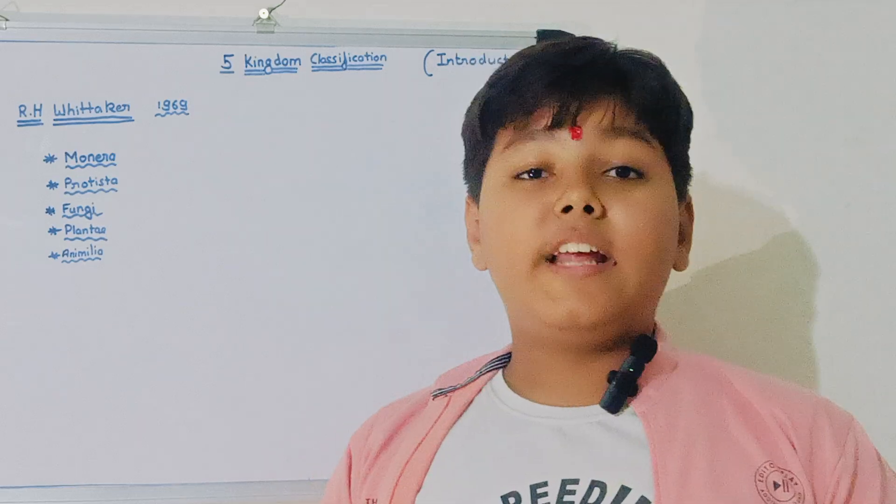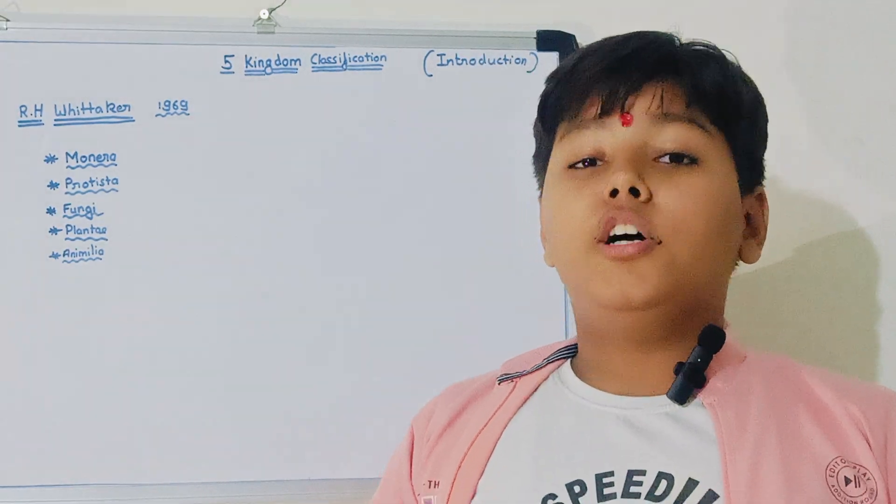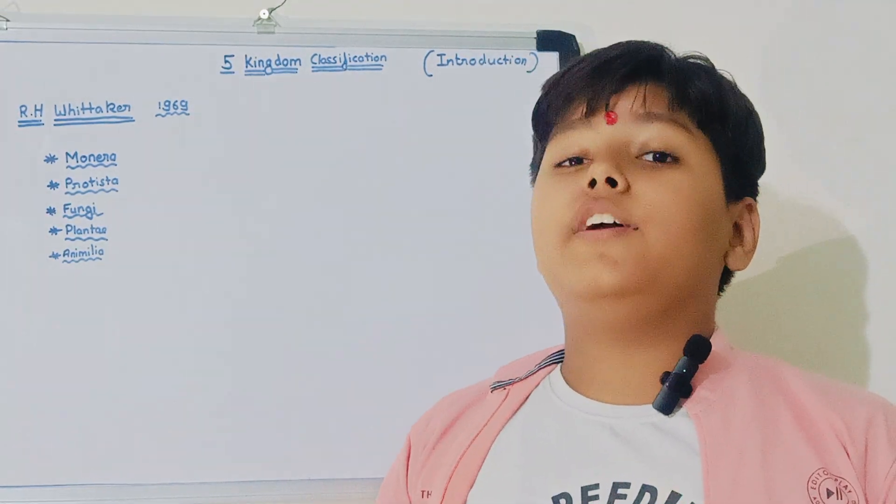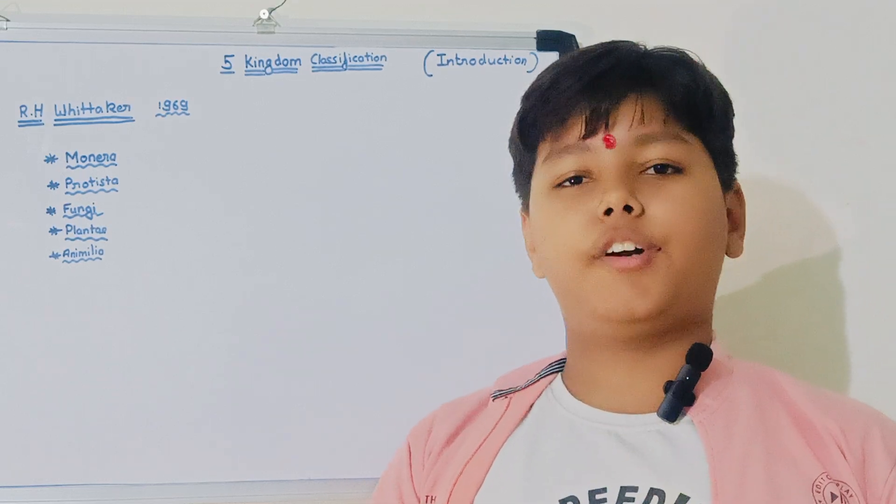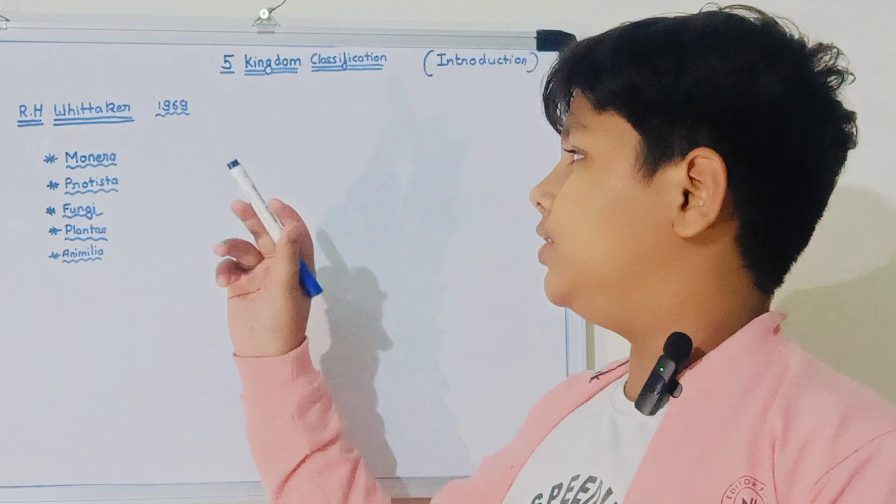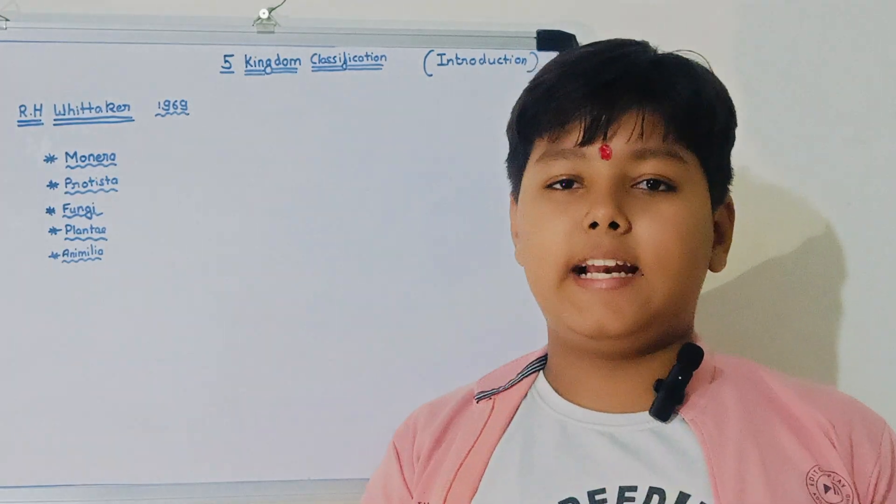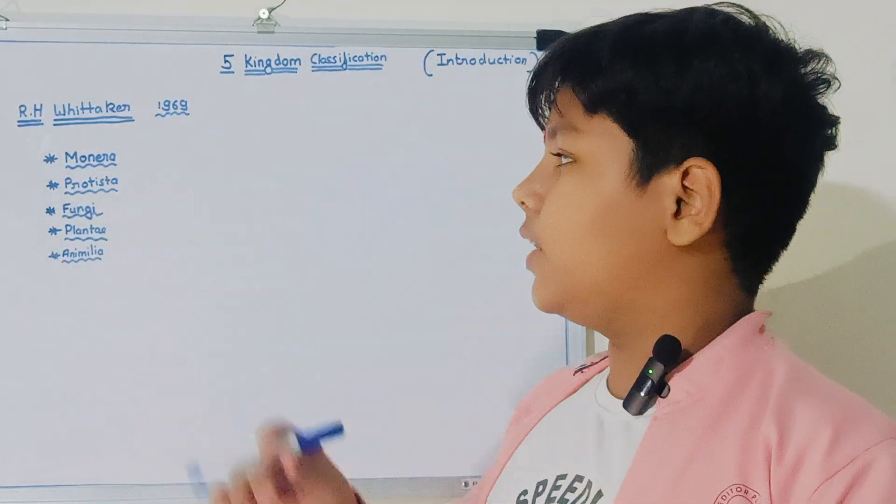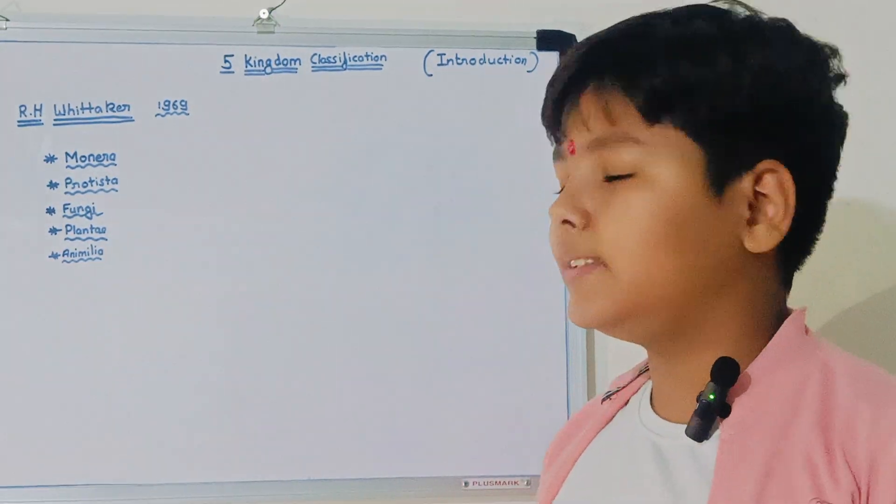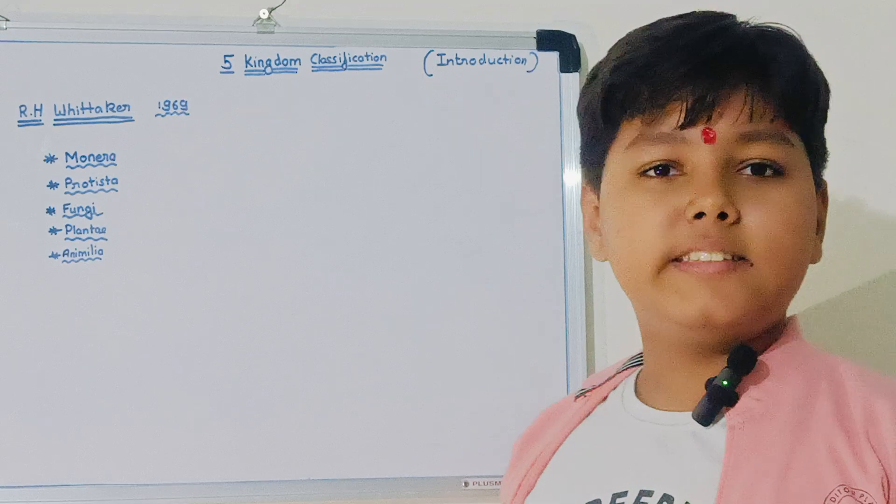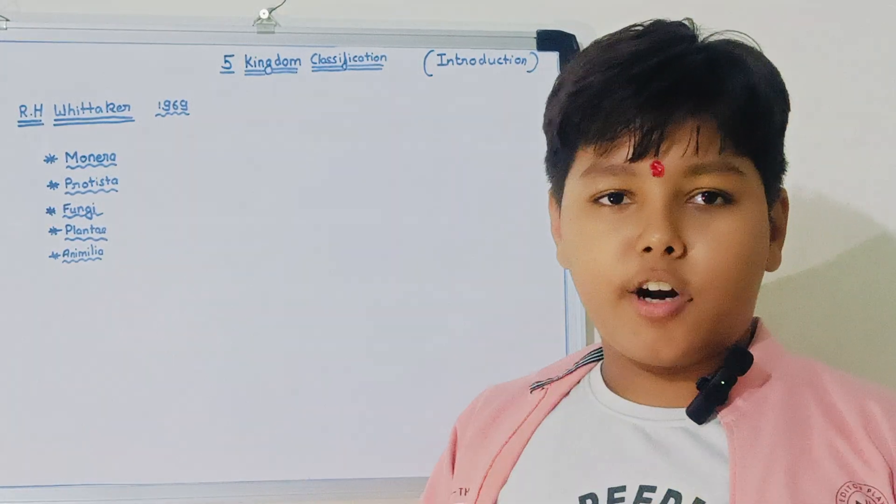First is Monera. Monera consists of single cell prokaryotic organisms, or unicellular prokaryotic organisms. Unicellular means single cell. It does not have many cells like us, like humans. It is single cell and it is prokaryotic.